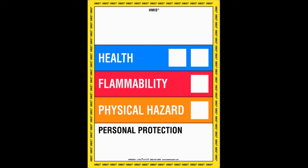The first one is the HMIS label. You want to focus on the blue, red, orange, and white bars and know what each represents. If you see orange, it's a physical hazard; if you see red, it's a flammability issue, etc. You can screenshot this or note the timestamp in the lecture to come back to it — it's also in your text.